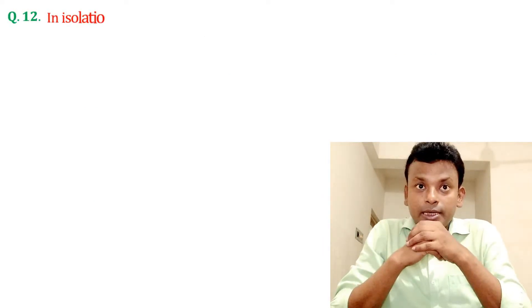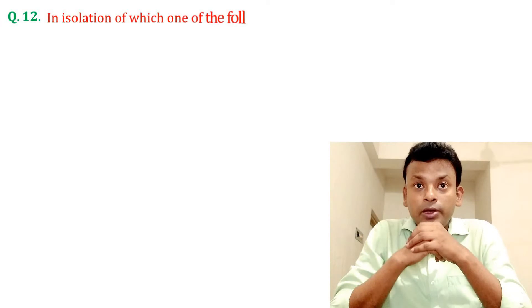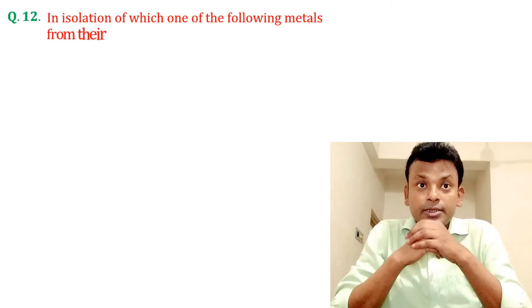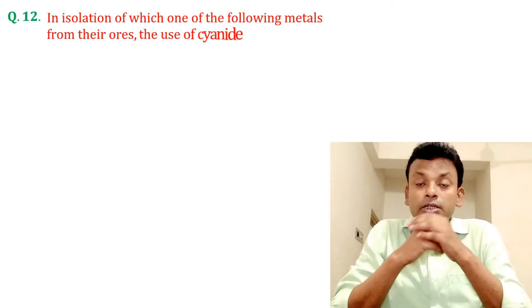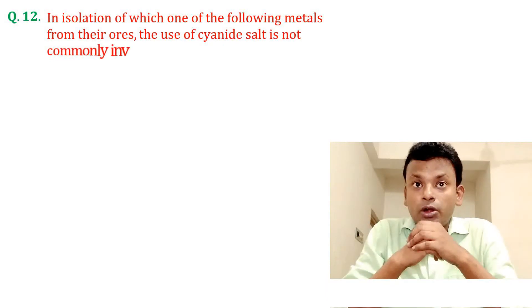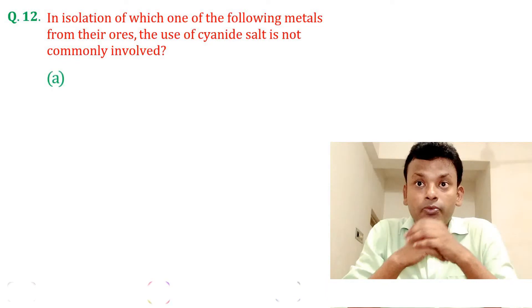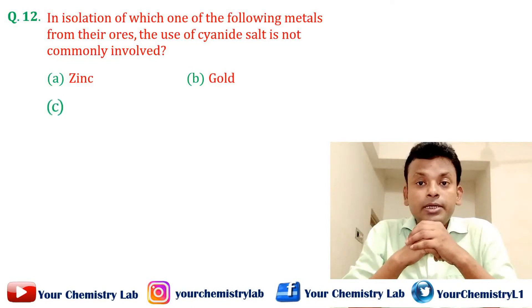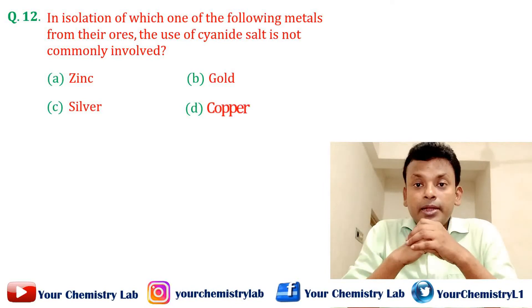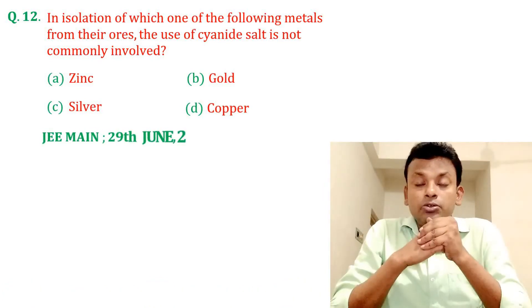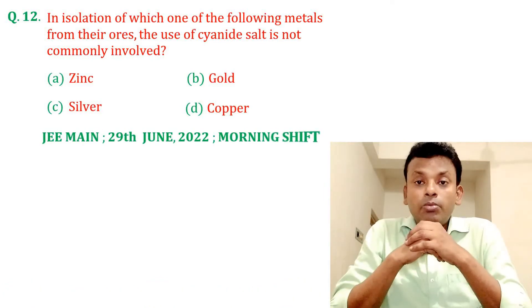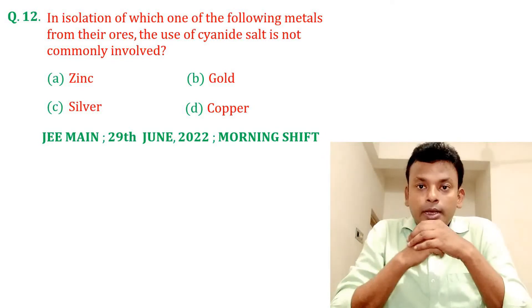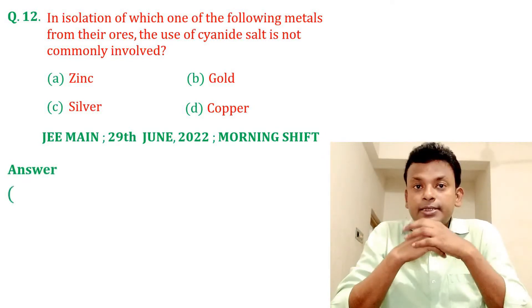Question number twelve: In the isolation of which one of the following metals from their ores is the use of a cyanide salt not commonly involved? Option A, option B, option C, or option D. This question was set in JMN 29th June 2022 morning shift. Answer: Option D is the correct answer.